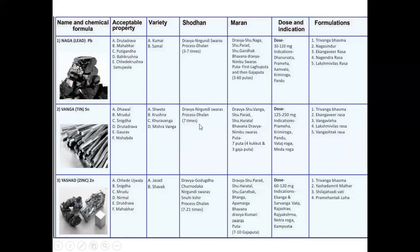For Vanga Marana, the dravyas used are Shuddha Vanga, Shuddha Parada, and Shuddha Hartaal. The Bhavana Dravya is Nimbu Swarasa. The Agni Sanskaras given are four Kukkutaputa and three Gajaputa — a total of seven Putas. Note that Laguputa and Gajaputa are used for Naga, Kukkutaputa and Gajaputa for Vanga, and Gajaputa is common across Naga, Vanga, and Yashada — remember this for examination purposes.